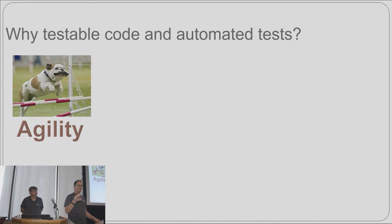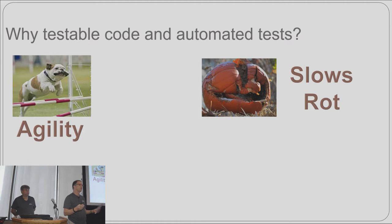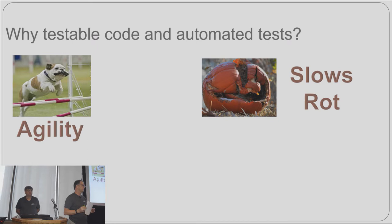We've all been exposed to the idea that we have to be agile to survive as developers and as a company — we have to respond to changing requirements and differing customer needs. Good code that is agile can anticipate change and is ready for change. Good code also slows code rot. Fragile code changes in unexpected ways, and when that happens nobody wants to work on it — they just don't touch it.